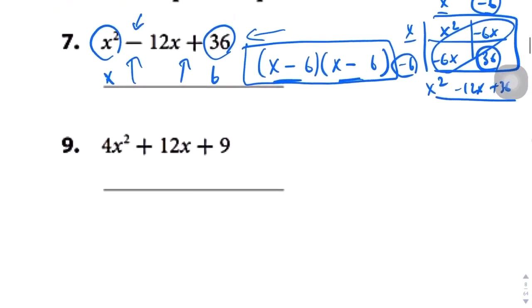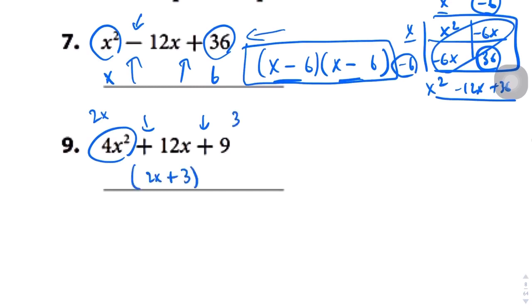Let's look at this one — plus and plus. What's our a term and what's our b term? The square root of 4x squared is 2x, and the square root of 9 is 3. So it's just going to be 2x plus 3, squared.